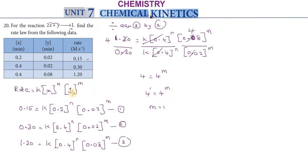Now divide equation 2 by equation 1. 0.30 equals k times 0.4 to the power n times 0.02 to the power m, divided by 0.15 equals k times 0.2 to the power n times 0.02 to the power m.